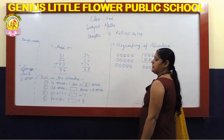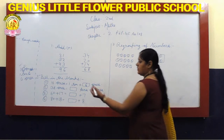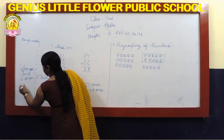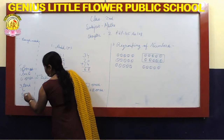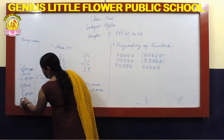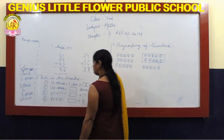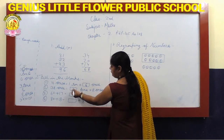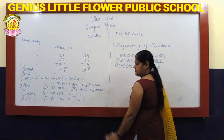Next in question 2: 38 ones. 38 ones — it means 38 ones mein hai 3 tens and 8 ones. 3 tens is equal to 3 multiply 10. 38 ones is equal to 3 tens plus 8 ones.